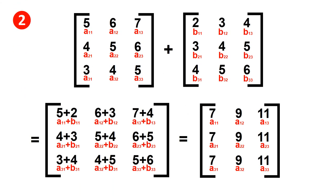The solution of the second problem is similar to the first. Here, two matrices have three rows and three columns, so they are of the same order. The first row gives: 5+2, 6+3, 7+4; the second row: 4+3, 5+4, 6+5; and the third row: 3+4, 4+5, 5+6. So the resulting elements are: first row 7, 9, 11; second row 7, 9, 11; and third row 7, 9, 11.